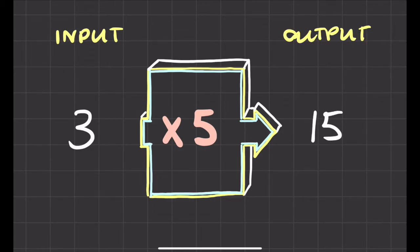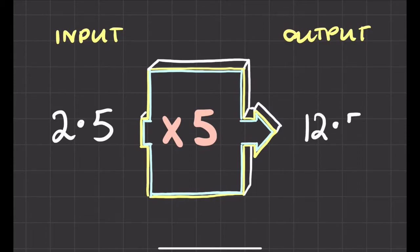So 3 times 5 is 15, so my input was 3 and I got out an answer of 15. And I could even be adventurous, I could try 2.5. Let's put in that number 2.5 times 5 is 12.5, so I can put in any number I want into this function machine and I can get out an output.